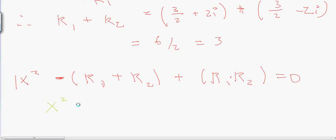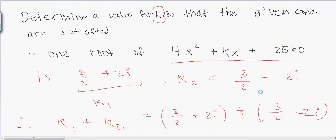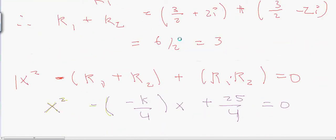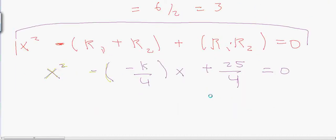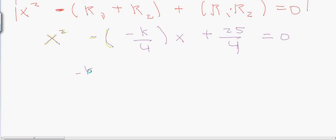We will have x squared minus negative k over 4, x plus 25 over 4 must equal 0. Now we know this because we just divided this whole thing by 4 and then we use this theorem.